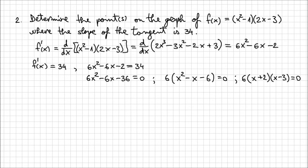And now we can see that for x = -2 or x = 3, this expression is going to be 0. Or in other words, the slope of the tangent is going to be 34.